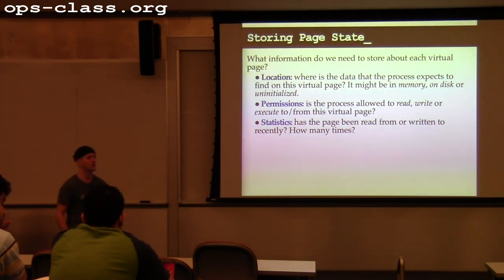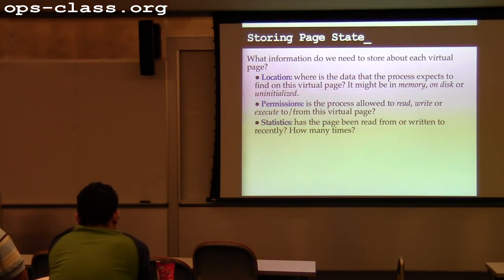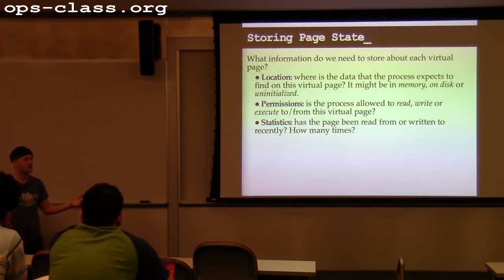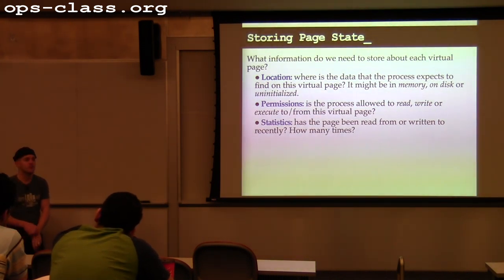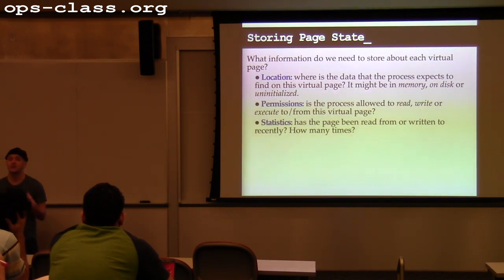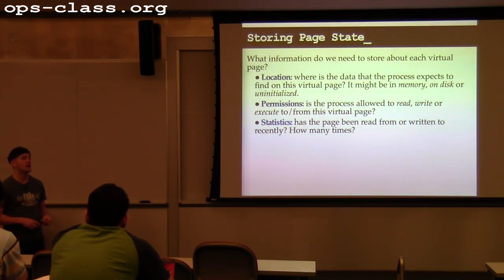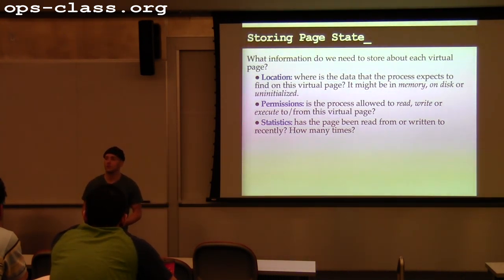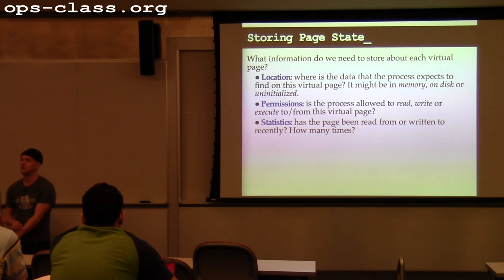This came up on Piazza — the process ID is used to find a process data structure, like a thread data structure on OS/161, which is then used to find the page table. You can look in your kernel right now and see how this is done. Your kernel is already capable of translating virtual to physical addresses, otherwise assignment two user programs wouldn't work. The problem is it uses a very dumb virtual memory manager that you'll replace in assignment three.